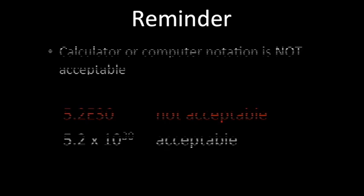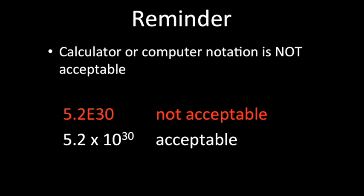Just a reminder: calculator or computer notation is not acceptable as a final answer. You can use a calculator for papers that allow it, but scientific and graphic display calculators display very big or small numbers using a shorthand notation for the exponent of 10. For example, 5.2 times 10 to the power of 30 might appear differently on screen — do not write that display notation as your answer, or you will lose marks. Always write your answer in proper standard form: 5.2 times 10 to the power of 30.